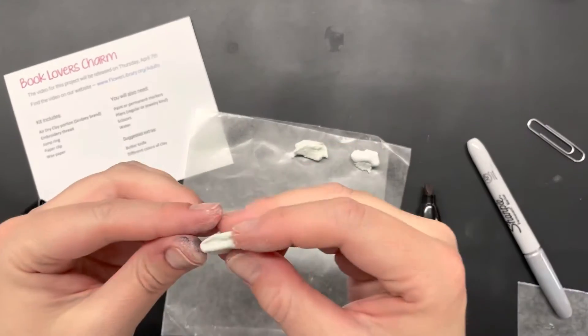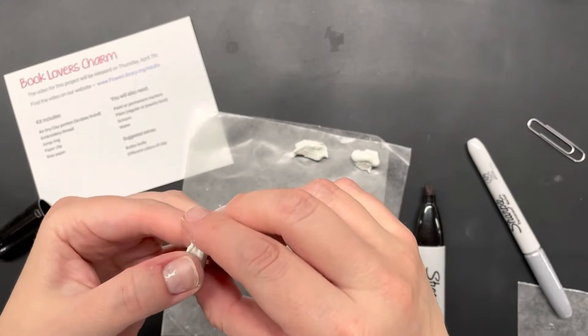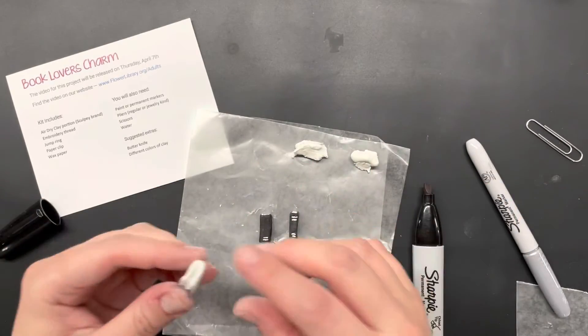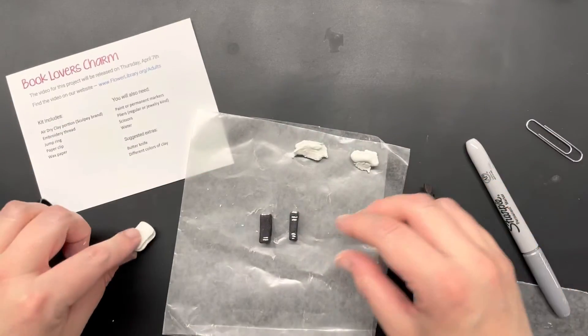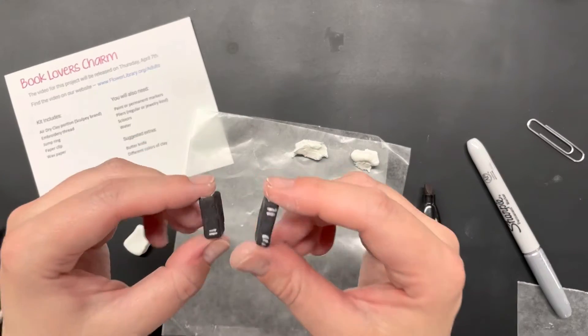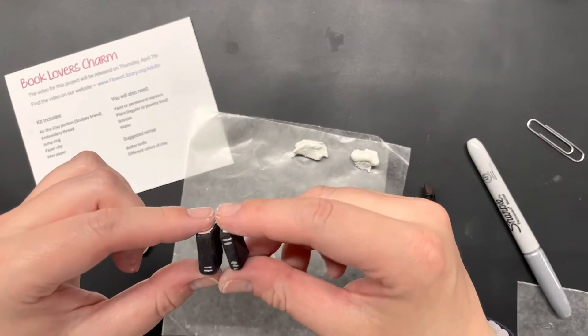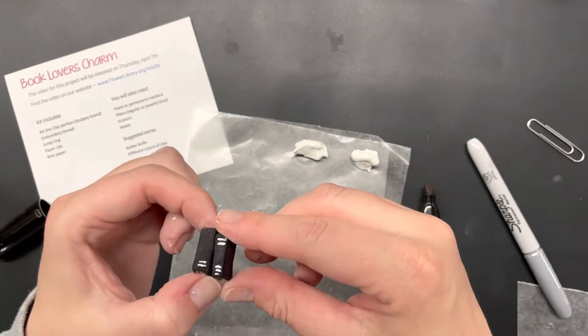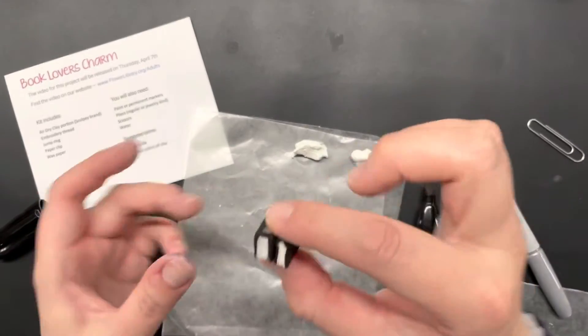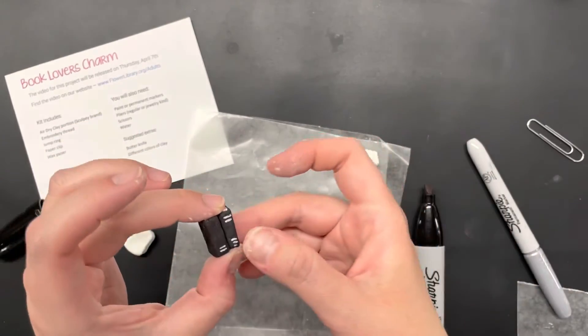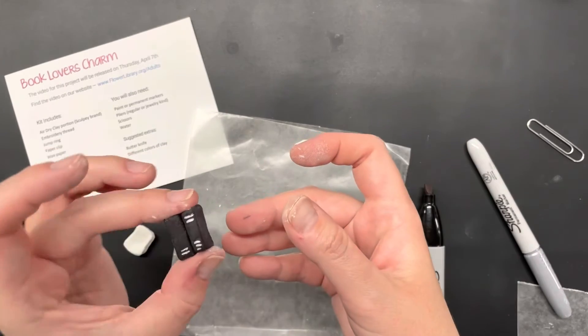And when this one dries, I will be able to paint this one as well. But instead of waiting for this one to be fully dried, I am going to go ahead and show you how you can use embroidery thread to then connect these to your jump ring to act as a little dangling charm from a necklace, a bracelet, or even turn it into a keychain.